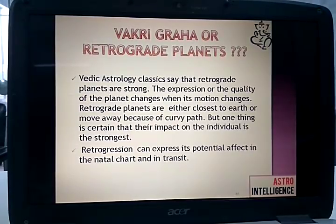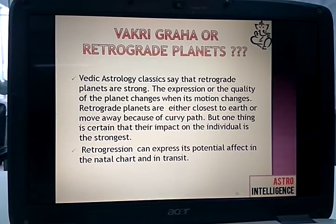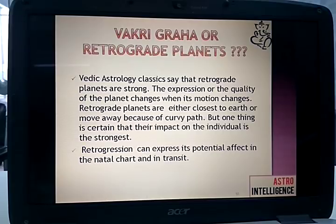Vedic astrology classics say that retrograde planets are strong. The expression or quality of a planet changes when its motion changes. Retrograde planets are either closest to the earth or they move away because of the curvy path. But one thing is certain — their impact on the individual is the strongest. The process of Vakra or so-called retrogression imparts strength to that planet. That planet becomes strong, flexible, and is capable of giving astonishingly innovative, strong results.